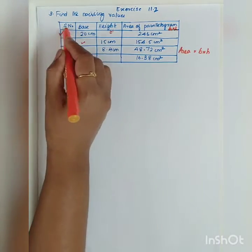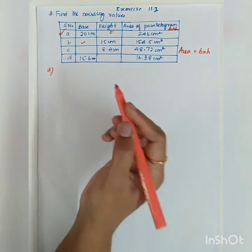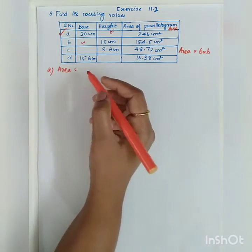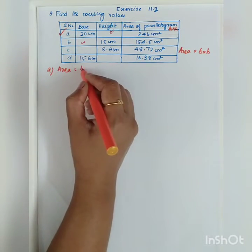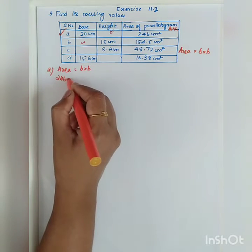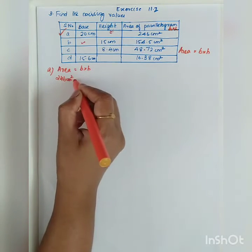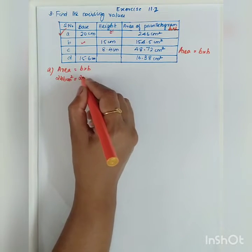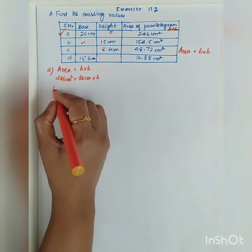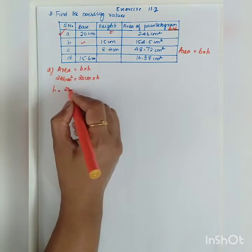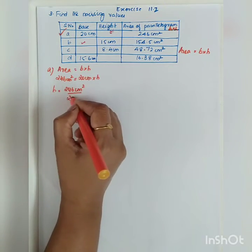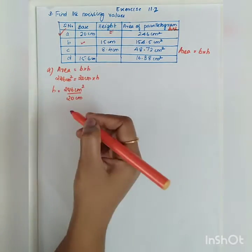Taking the first option, Part A: area is given as 246 centimeter square, which equals base into height. The base is given as 20 centimeter, so height equals 246 centimeter square divided by 20 centimeter.